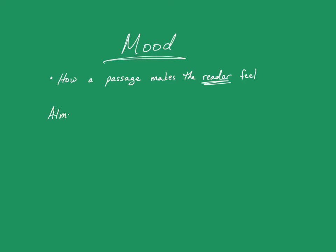Mood is also connected to the atmosphere of a scene — how does it feel to the reader? The mood can be created through the author describing the setting. If the setting is very creepy and oppressive, that's going to affect the reader. If the setting is peaceful and tranquil and beautiful, then that will affect the reader. The author will also use imagery to create a mood. If the images are ominous and distressing, the reader will feel that ominous feeling, that feeling of foreboding. If the images are comforting and domestic, then the reader will feel that.